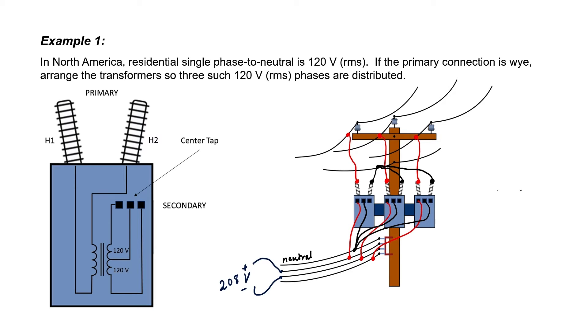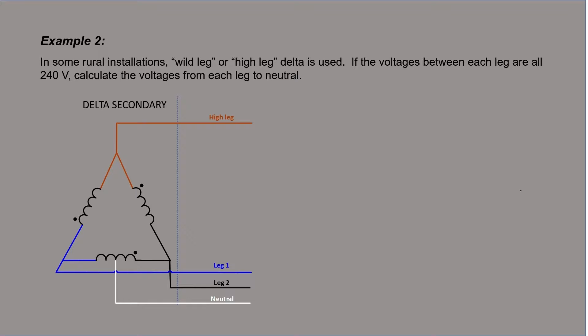Now I've not drawn the grounding connections on this pole, but normally the neutral would be grounded at the pole. Let's take a look here at a delta secondary, and in particular we're going to look at something called a wild leg delta connection.